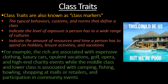The rich are associated with expensive clothing, luxury cars, opulent vacations, golf, opera, high-end charity events, and galas. The middle and lower class are more associated with camping, fishing, bowling, shopping at the mall or TJ Maxx, and participation in community events like fairs or parades — cheaper activities. The wealthiest class traits include a private yacht or multiple vacation homes, while the middle and lower class might be more associated with Airbnb stays or a timeshare.